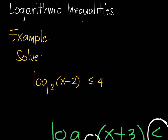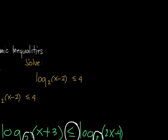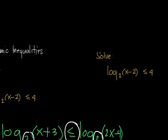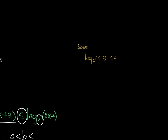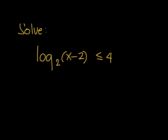Let's recreate a new problem. If we want to solve the logarithmic inequality log base 2 of x minus 2 less than or equal to 4, what we will do is create a log on the 4. Once we have a log on the 4, we can go back to the usual way of solving logarithmic inequalities.